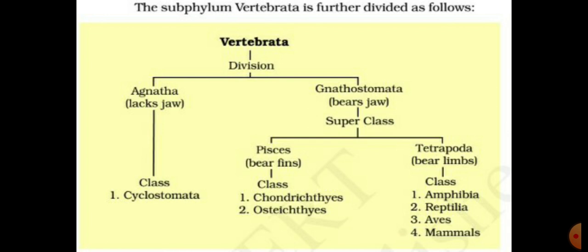The first subphylum is Cephalochordata. Cephalo means the cephalic or head region — the notochord is present only in the anterior or head region of these animals. The example of Cephalochordata is Amphioxus. Amphioxus is a small eel-like animal, broad in the center and tapering toward both ends, similar in shape to a small earthworm. It is a totally aquatic animal.